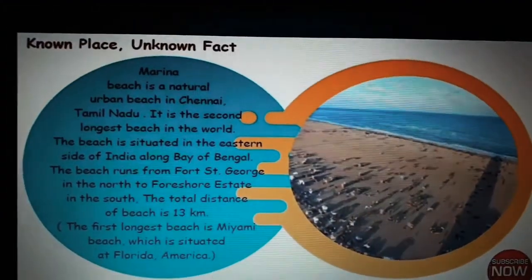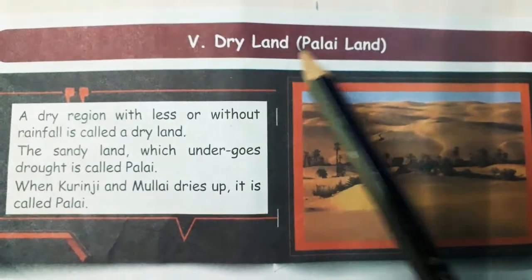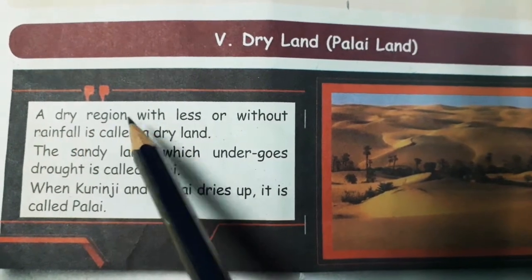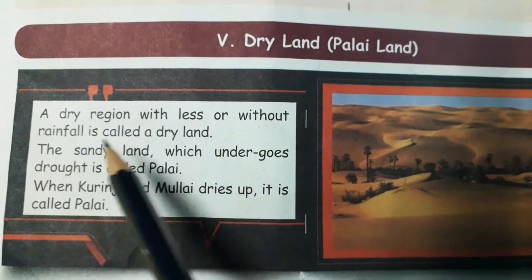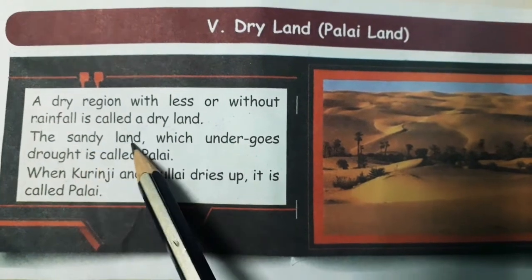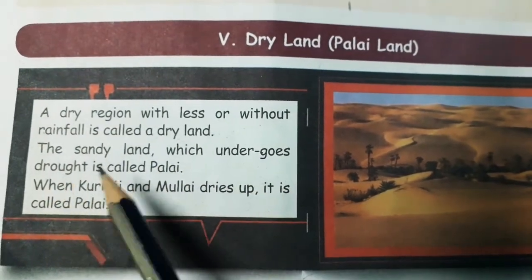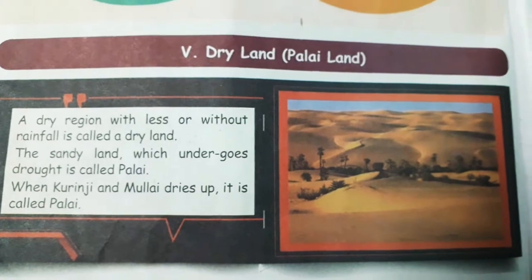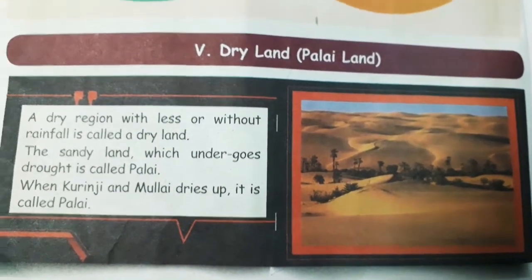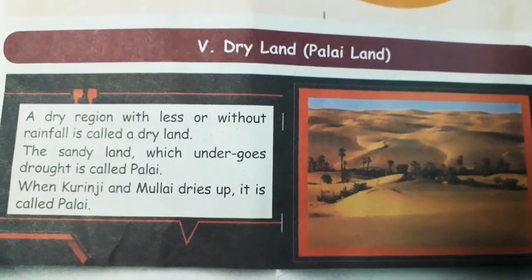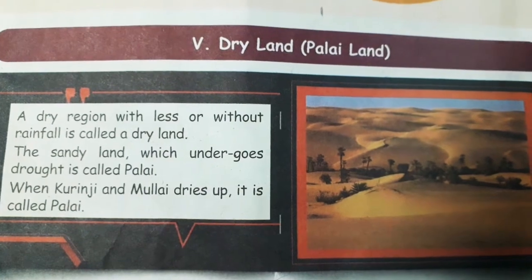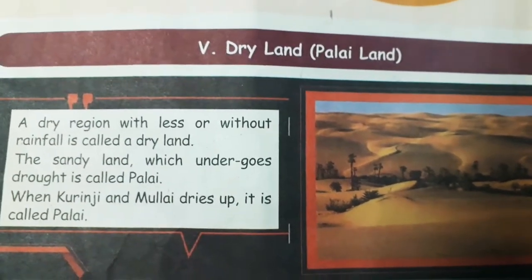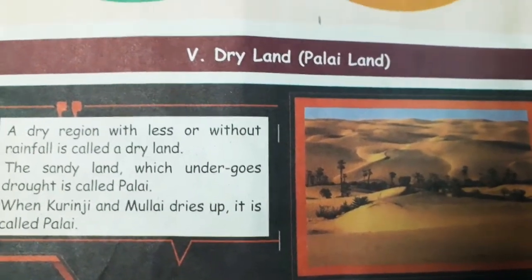Next we will see the dry land or Palai land. A dry region with less or without rainfall is called a dry land. The sandy land which undergoes drought is called Palai. Drought means lack of water or shortage of water — the land doesn't have any rainfall. In this sand there is no moisture; it is full of sandy land with no moisture, and that place is called dry land.